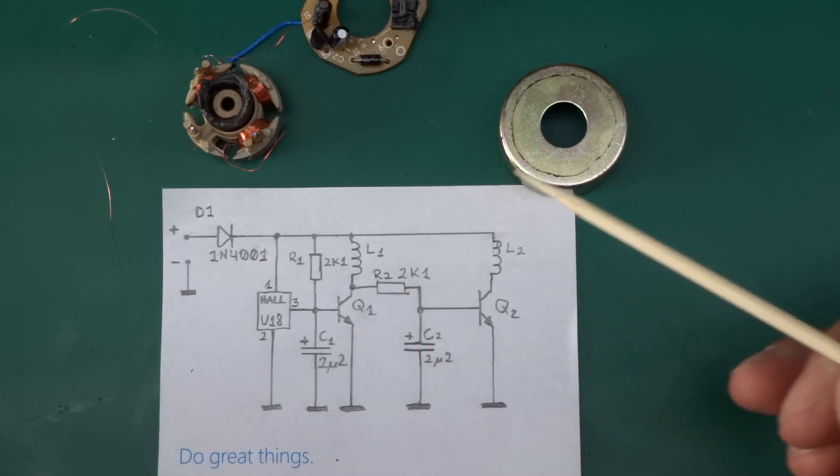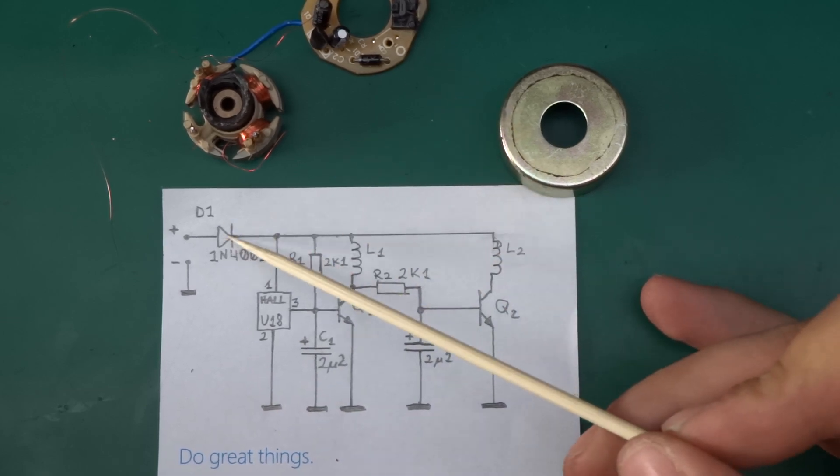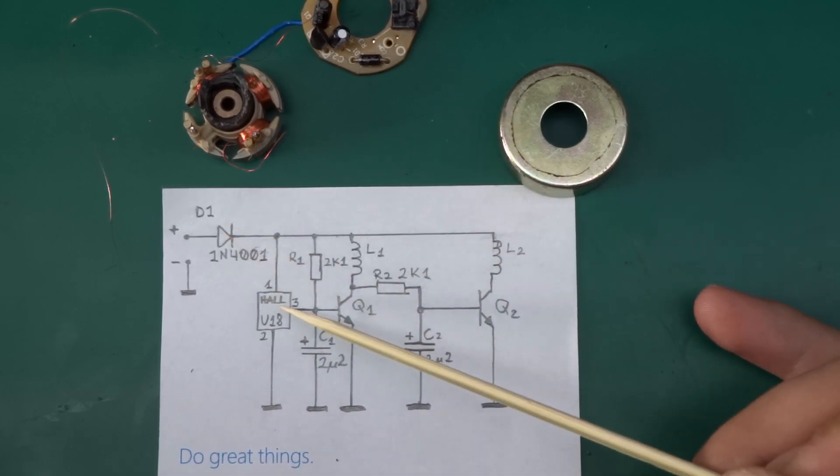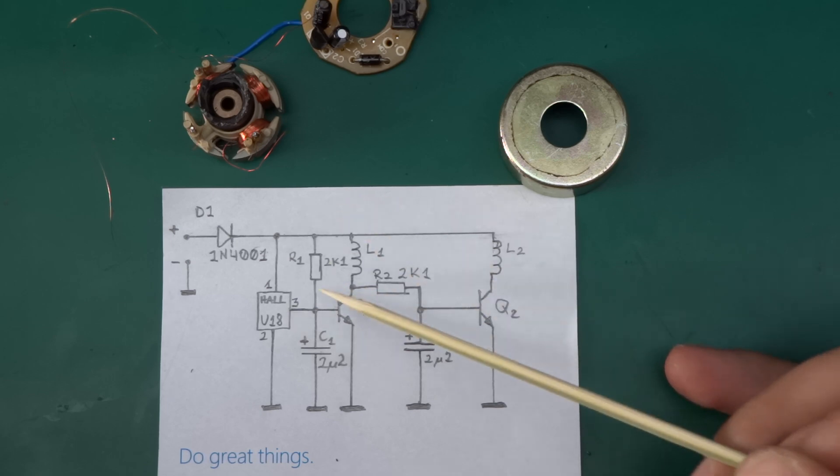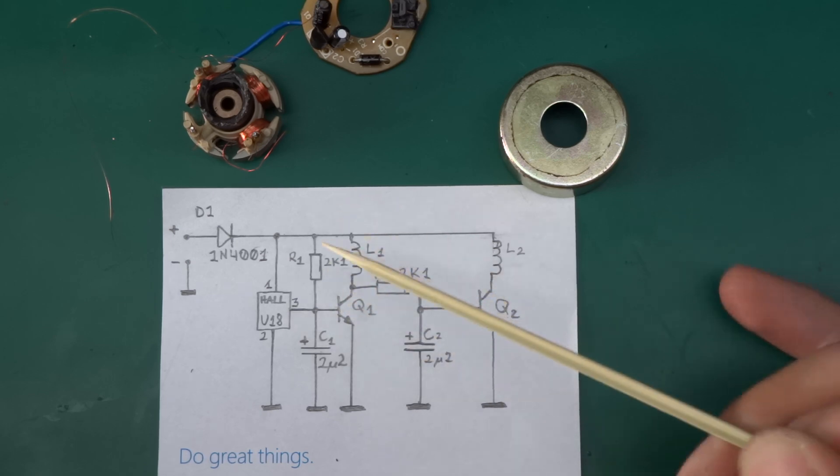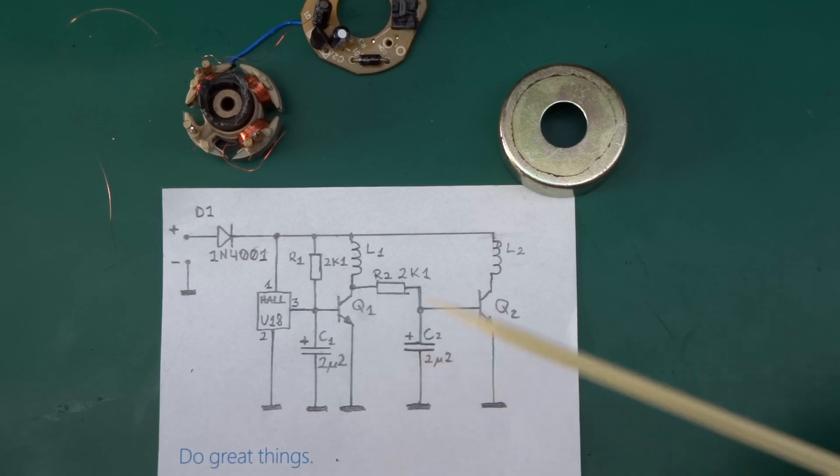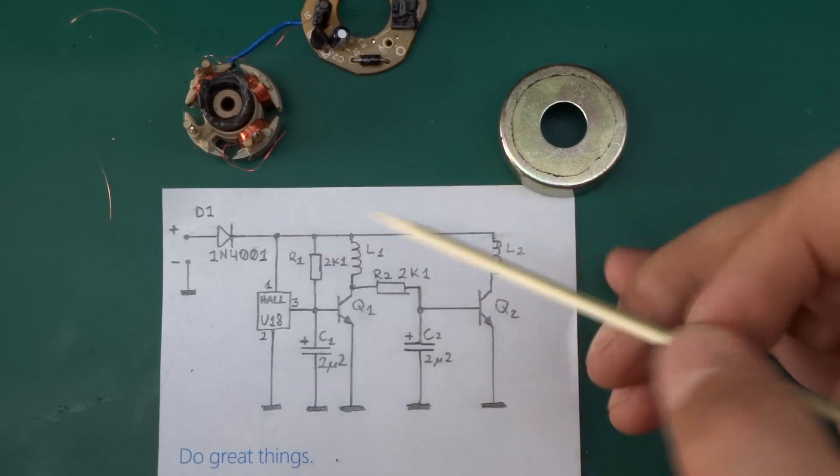Looking at this, there's only a handful of components: a protection diode, the Hall effect sensor which in this case is U18 (it's a latch type Hall effect sensor), two transistors, two resistors, two caps. That's it. It's a really simple circuit.